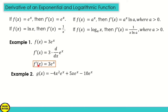Another example: g of x is equal to negative 4x squared e raised to x, plus 5x times e raised to x, minus 10 times e raised to x. We can apply the product rule here. So u is negative 4x squared and v is e raised to x. Similarly, for the second term, u is 5x and v is e raised to x, and for the third term, u is negative 10 and v is e raised to x.